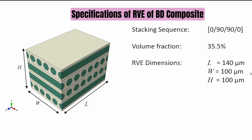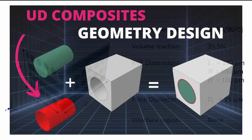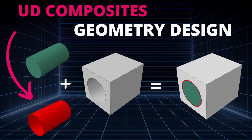The dimensions we'll work with are a total length of 140 microns and two in-plane directions of 100 by 100 microns. The fiber has a diameter of 15 microns for an A-glass fiber. The interface region for the fibers is not considered here, though you could include it — there's a separate video on modeling interface effects in a unidirectional composite.